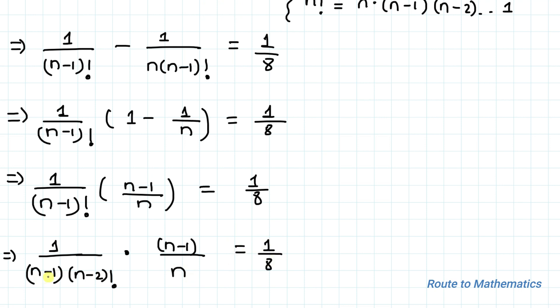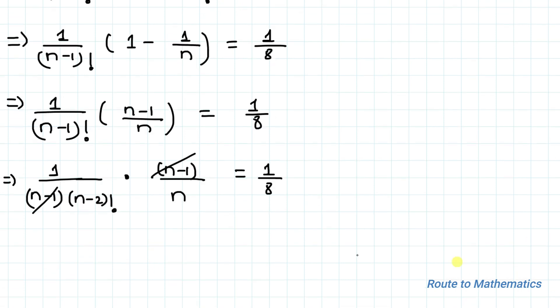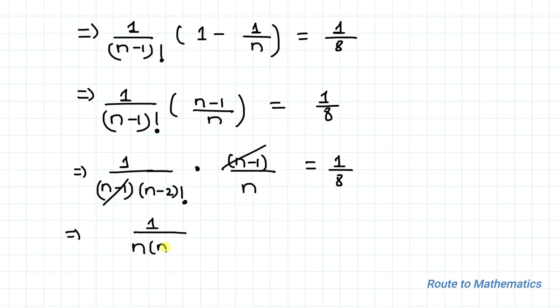So here you can notice that here we have (n-1) and here also we have (n-1). So these two get cancelled out. So we are getting 1 by n multiplied with (n-2)! equals to 1 by 8.